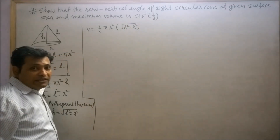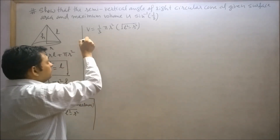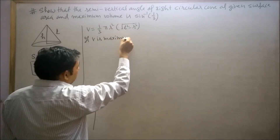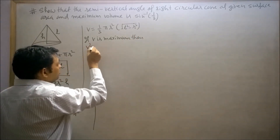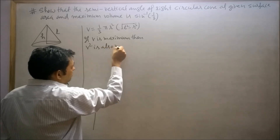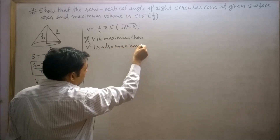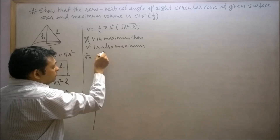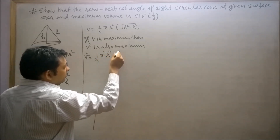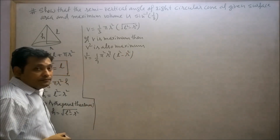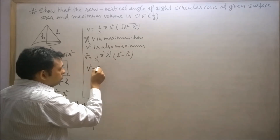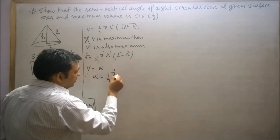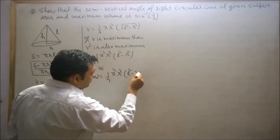If V is maximum, then V² is also maximum. So V² = (1/9)π²r⁴(l² − r²). Let V² = w, therefore w = (1/9)π²r⁴(l² − r²).